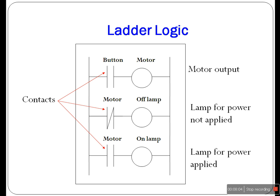Here is an example: consider a motor operated by a button — for as long as the button is held down, the motor will be ON. When the motor is ON, an ON light must be ON. When the motor is OFF, the OFF light must be ON. This example shows how contacts can follow the state of an input or output device. The contact labeled 'button' follows the state of a button wired to the PLC, and the contact labeled 'motor' follows the state of the motor output device.